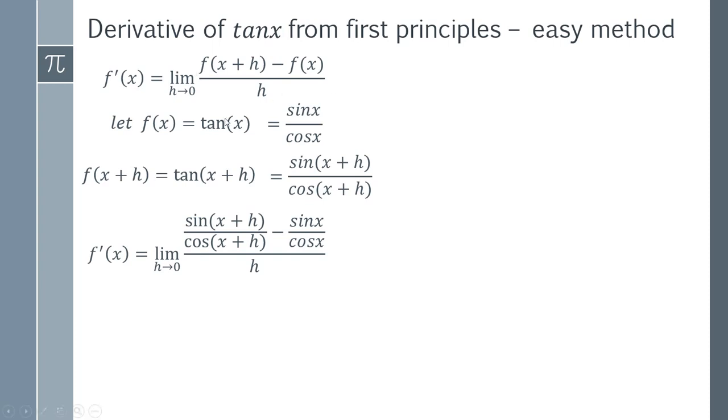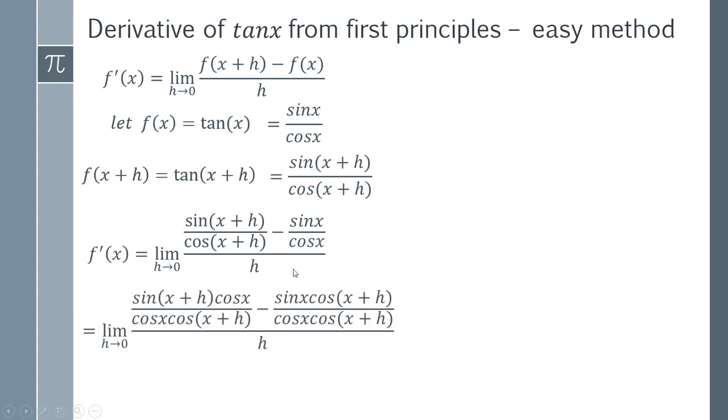So we need to common denominator this so that we can combine it. So top and bottom of this fraction has to be multiplied by cos x plus h. And then top and bottom of this fraction here is going to be multiplied by cos x. So I've done that here, and we've now got a common denominator. And so it means that we can combine this fraction and this fraction together.